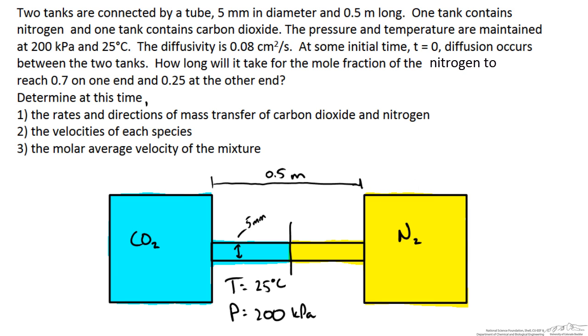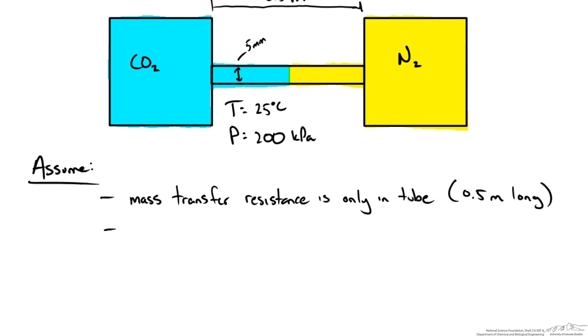Even though I drew the separator here in the middle, we are going to pretend that we are using this entire distance. We are going to assume that the only mass transfer resistance is in the tube. We are going to assume that we have perfectly well mixed ideal gases based on these properties. Because of these we are going to get equal molar counter diffusion.